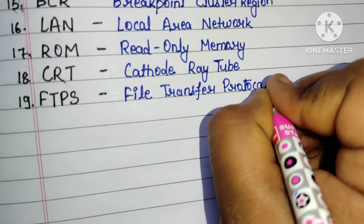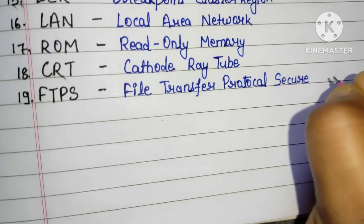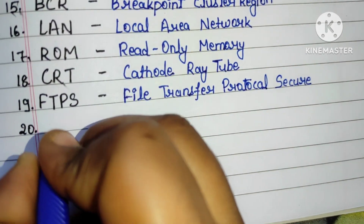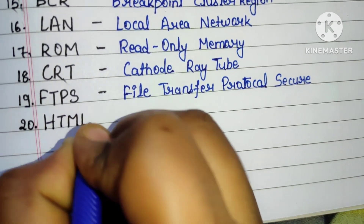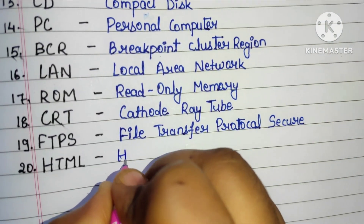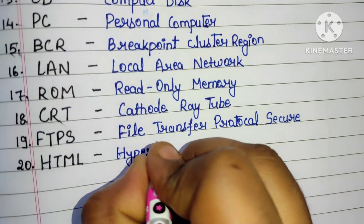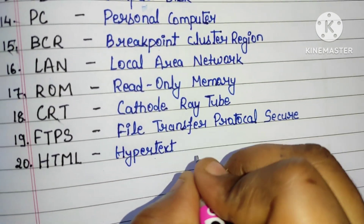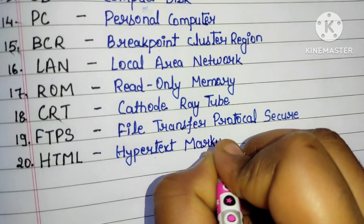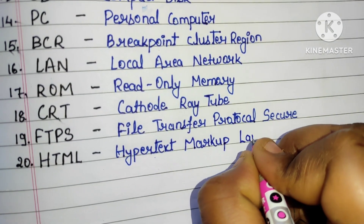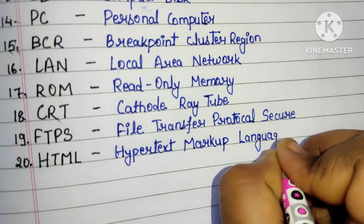Nineteen: FTP - File Transfer Protocol. Twenty: HTML - HyperText Markup Language.